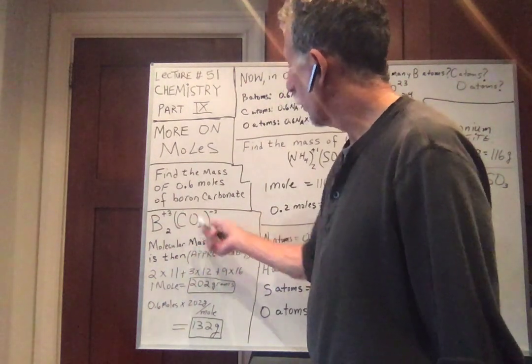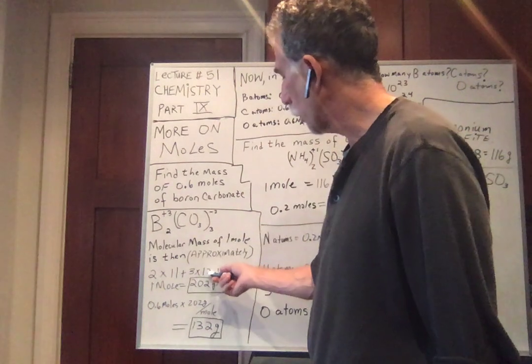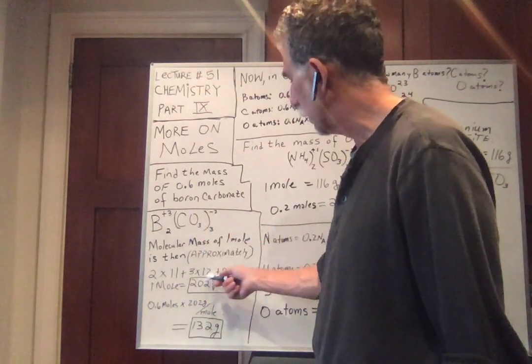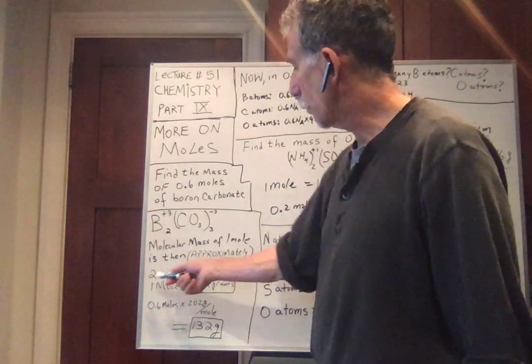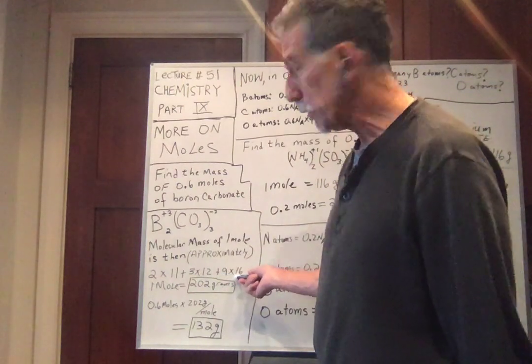Now carbonate. We have 3 carbons. Carbon is 12. And then how many oxygens. We have 3 times 3 is 9 oxygens. Each with a mass of 16. So if we add 22 plus 36 plus 144.